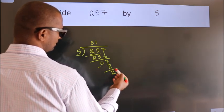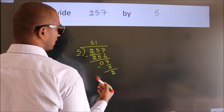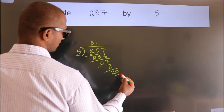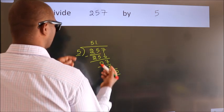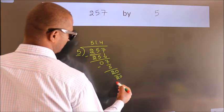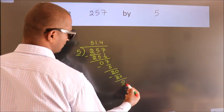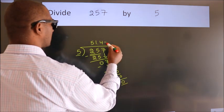After this, no more numbers to bring down. So, what we do is, we put a dot and take 0. So, 20. When do we get 20? In 5 table. 5 fours, 20. Now, we subtract. We get 0. We got remainder 0. So, this is our quotient.